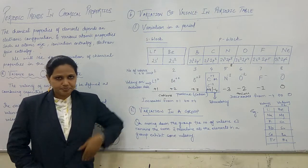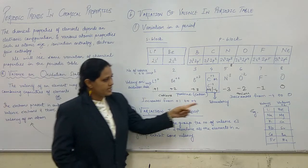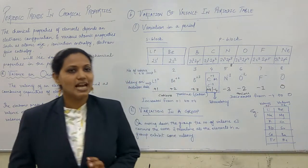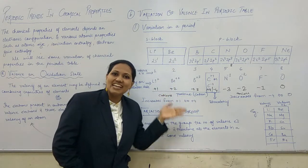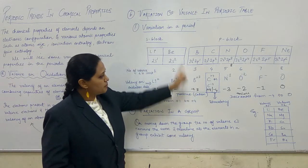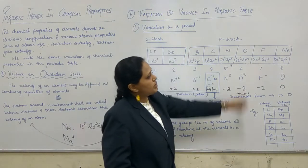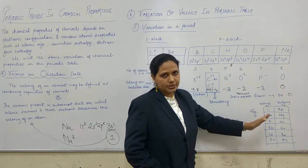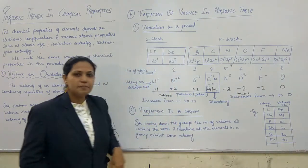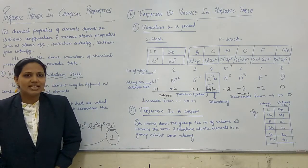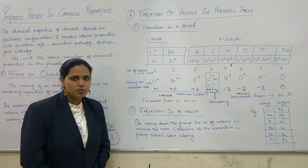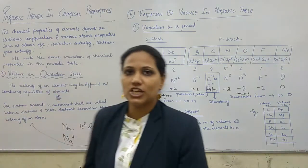Now about variation in a group - vertical direction. For example, here we have four elements, all with the same valence electrons. Therefore, the number of valence electrons remains the same and all elements in a group have the same valency. This completes the chemical properties section.